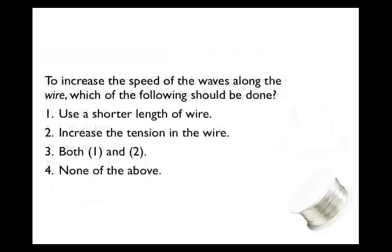If you wanted to increase the speed of waves along the wire, what could you do — use a shorter length of wire, increase the tension, both, or none of the above? The correct answer is to increase the tension. Using a shorter length would mean waves get from one end to the other faster, but while traveling along the wire they wouldn't have any different speed. The only two factors that affect wave speed on a spring, string, or wire are the tension and the mass density — and as we'll see with light, the material the waves move through determines their speed.